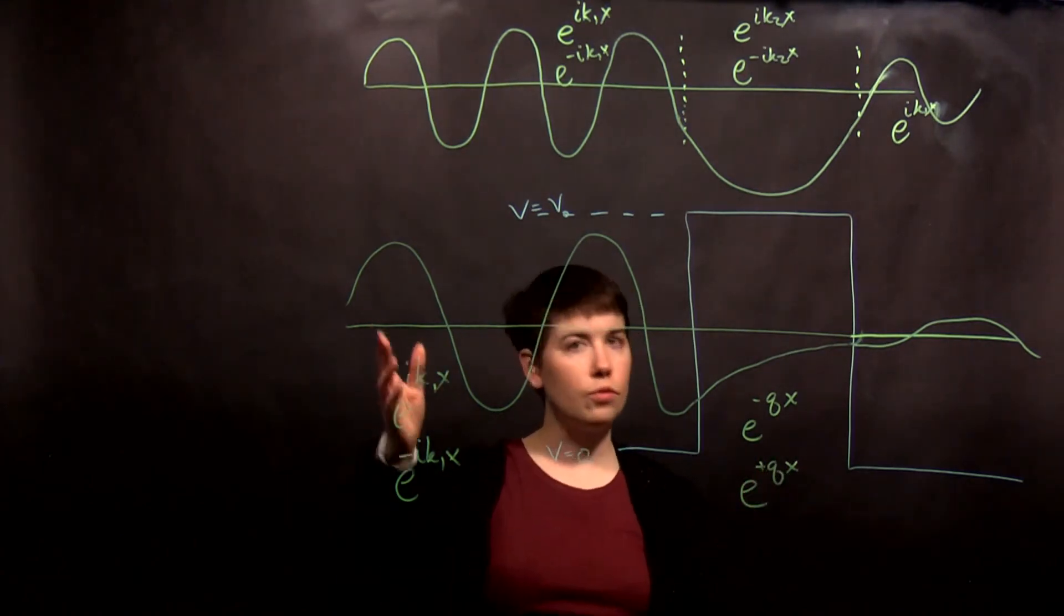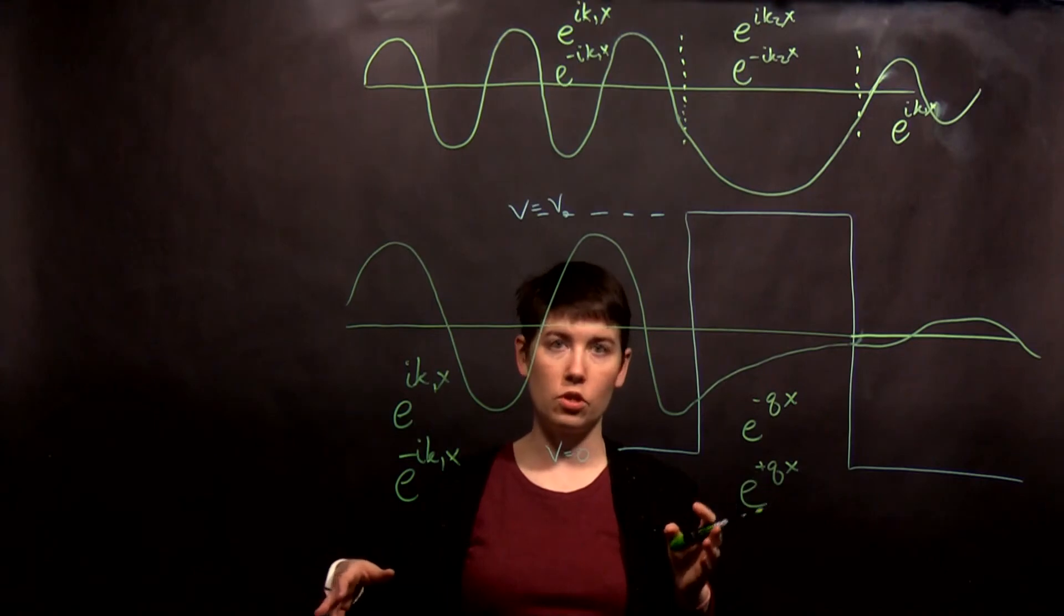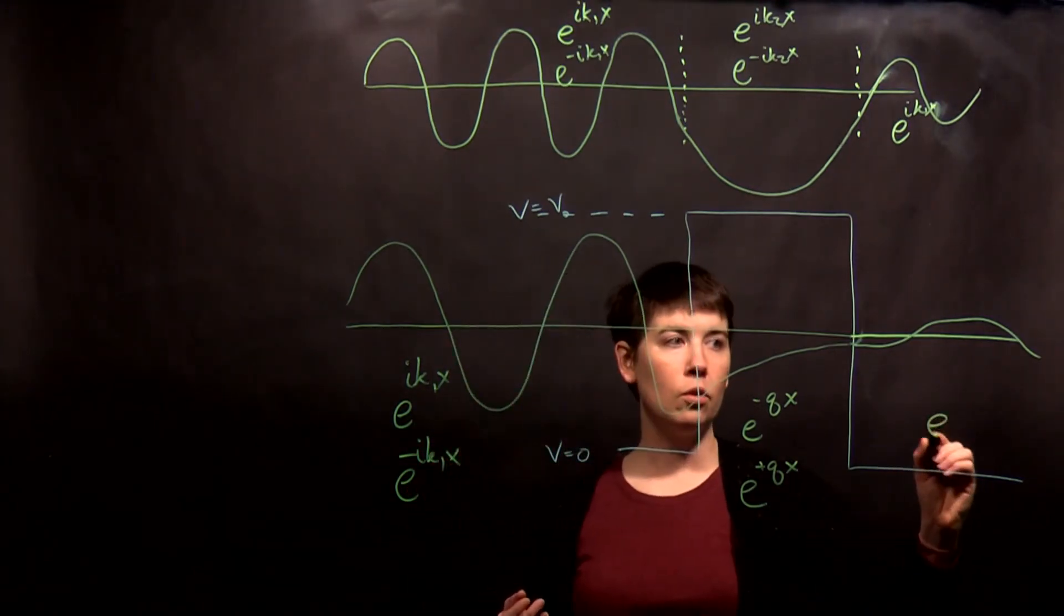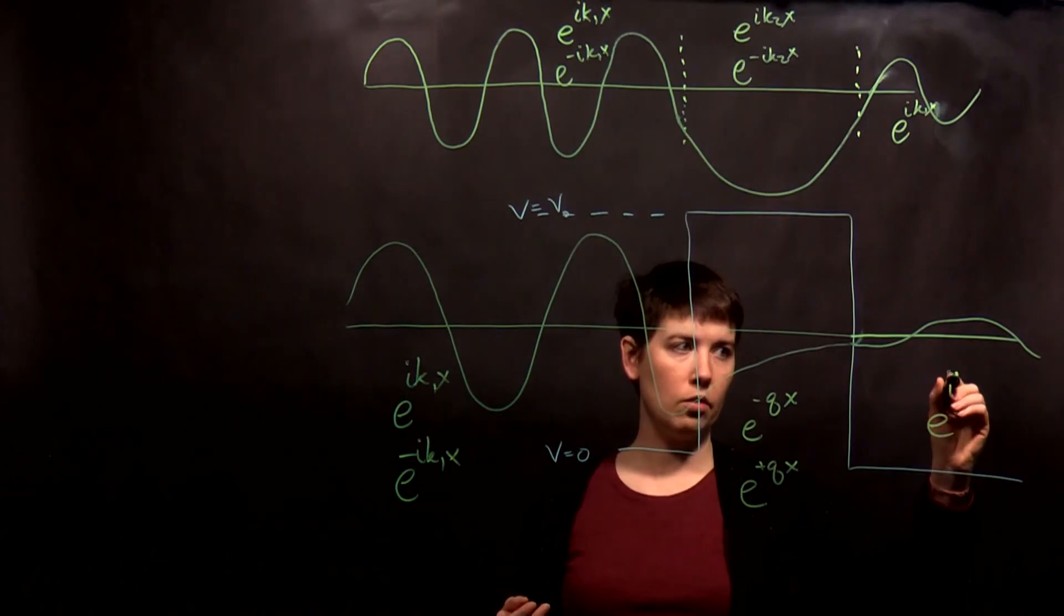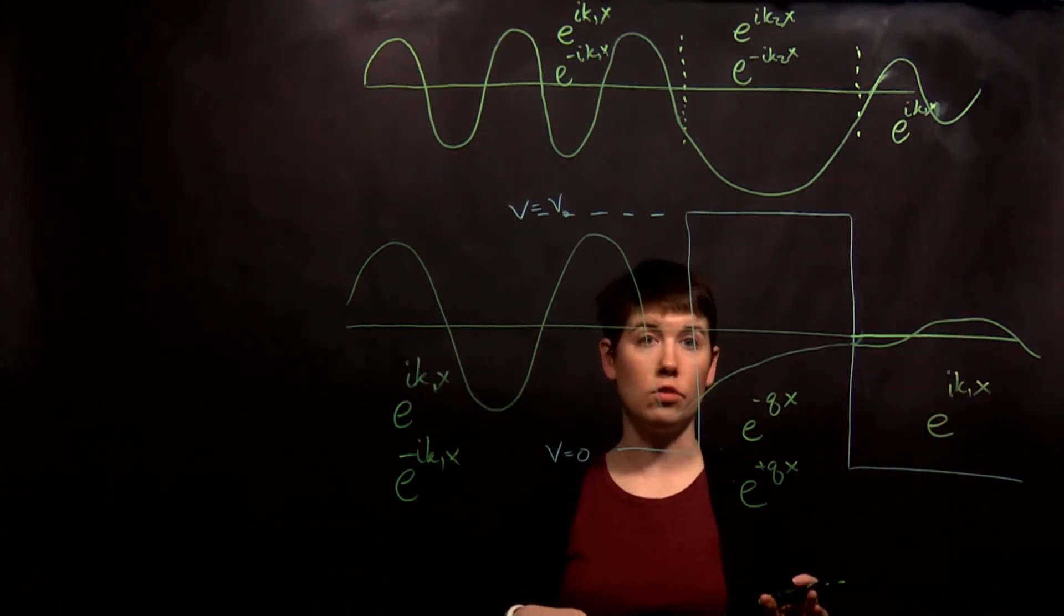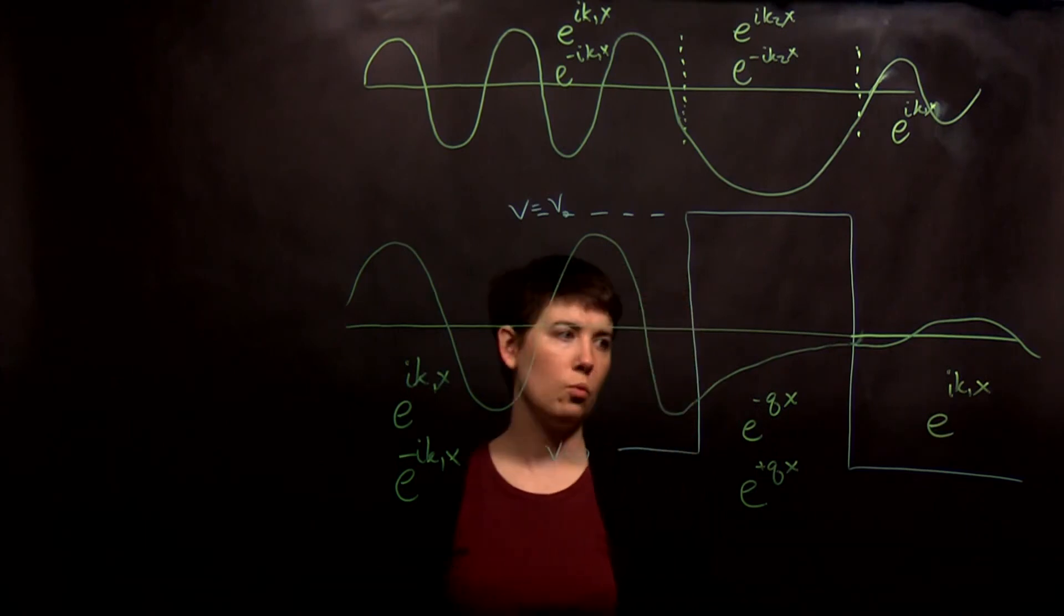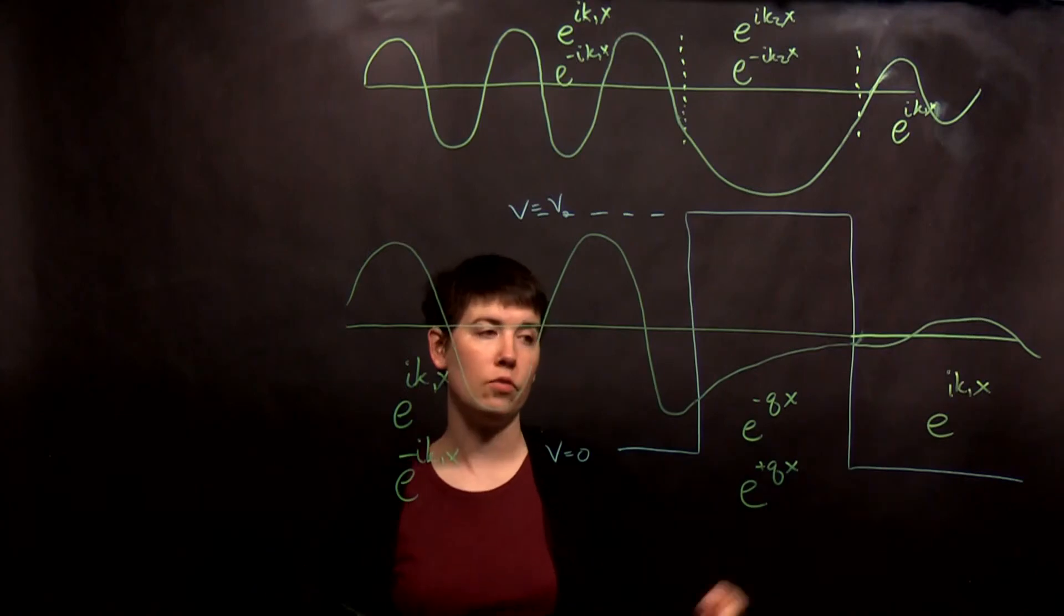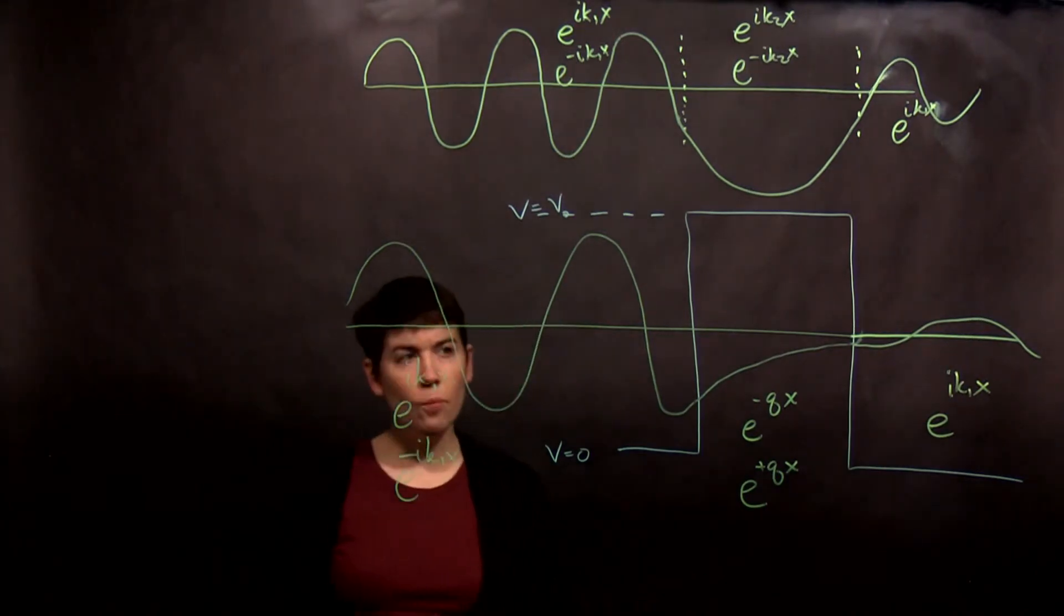So again, there's different coefficients here. There's different coefficients here. You'd actually have to do the math to solve it. And then over here, we're back to that rightward traveling wave with again the same k1 as before because our energies are the same. If you had a situation where now this was a higher level, this would be like k2. It would be a different value. So I hope that this makes sense.